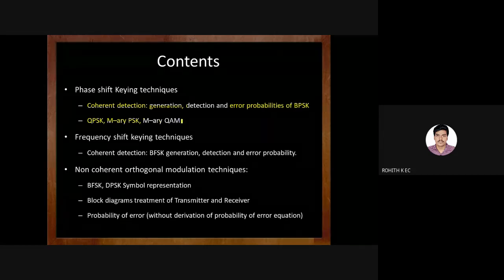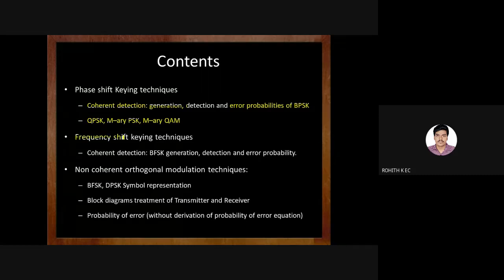After that we will discuss quadrature phase shift keying, M-ary PSK, and M-ary QAM — that is quadrature amplitude modulation. Then we will move on with frequency shift keying, covering coherent detection, generation, and derivation of probability of error, followed by non-coherent detection techniques including FSK and DPSK — their block diagrams and probability of error. For non-coherent techniques we will compare the equations rather than derive them.